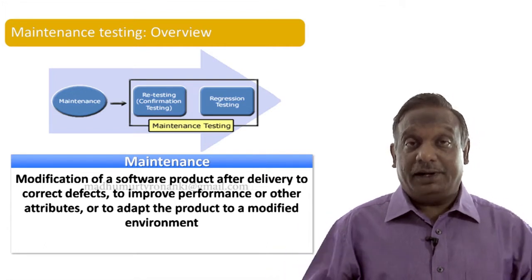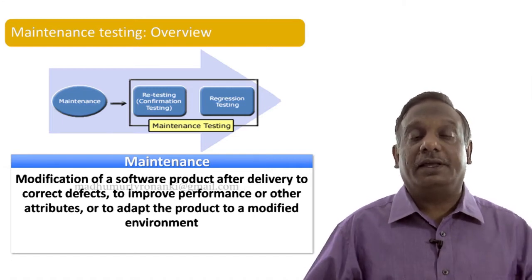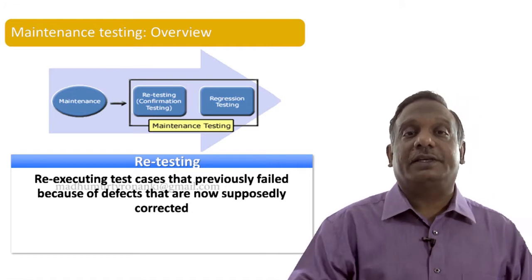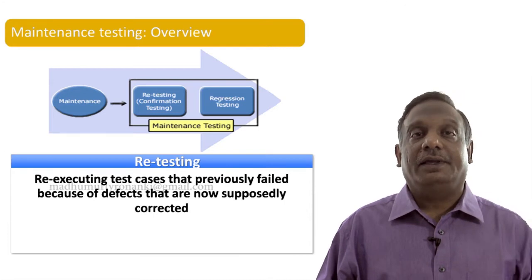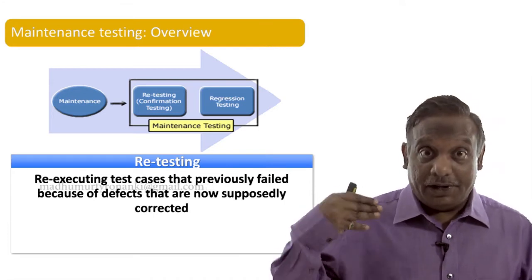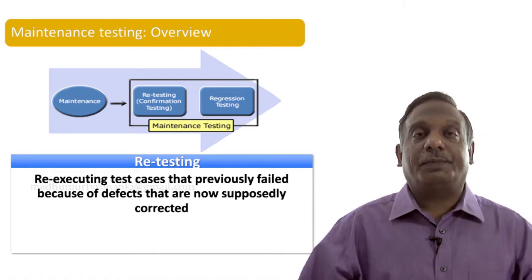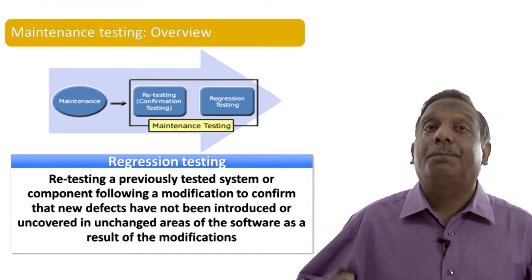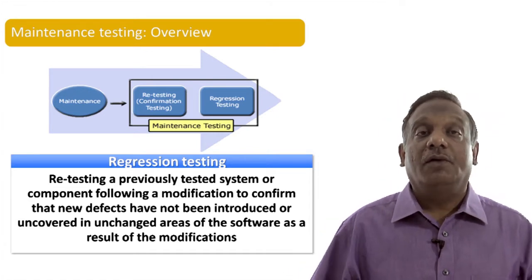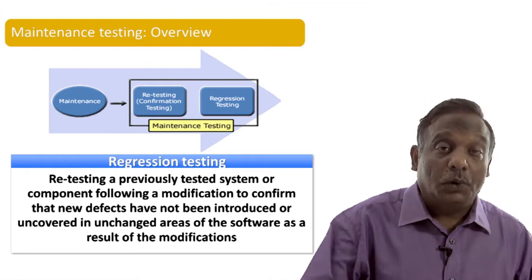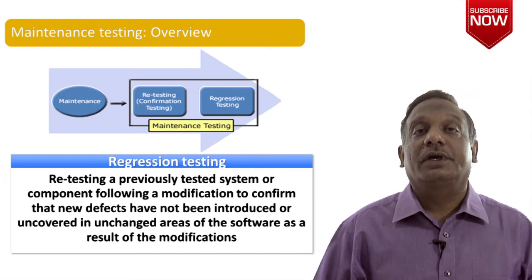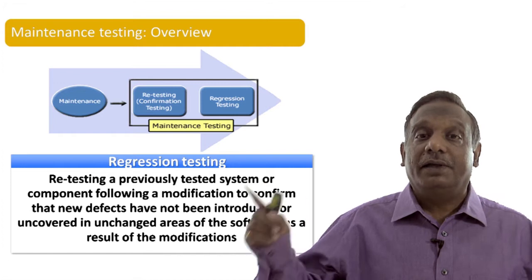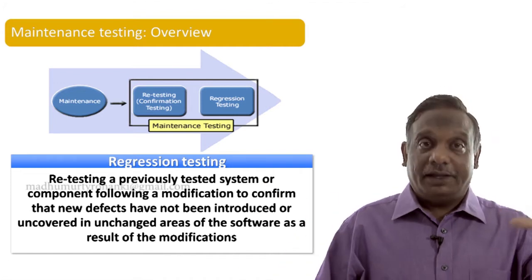During maintenance, the most relevant test types are retesting and regression testing. Retesting means re-executing test cases that previously failed because the defects were now supposedly corrected. Regression testing is retesting a previously tested system or component following a modification, to confirm that no new defects have been introduced or uncovered in unchanged areas of the software as a result of the modifications.